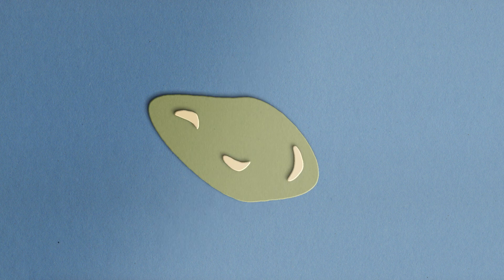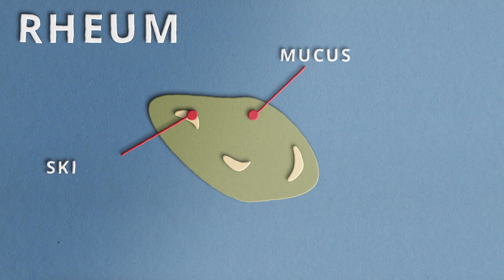That eye gunk, which has a technical name, rheum, is made up of mucus, skin cells, oils, and dust.